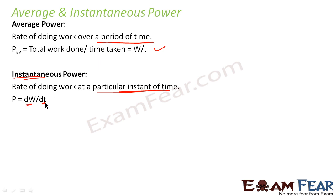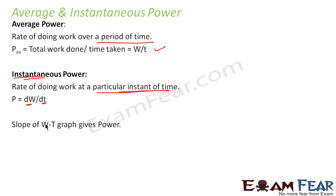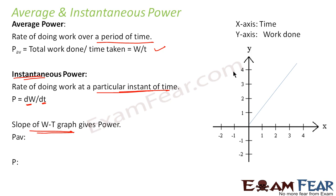Instantaneous power is generally denoted as dw by dt. We use dw by dt because at a particular instant, we consider an infinitesimally small time period dt, and the very small amount of work done in dt is dw. Power is given by the slope of the work-time graph. If we plot work done along the y-axis and time along the x-axis, the slope of this graph gives the value of power.